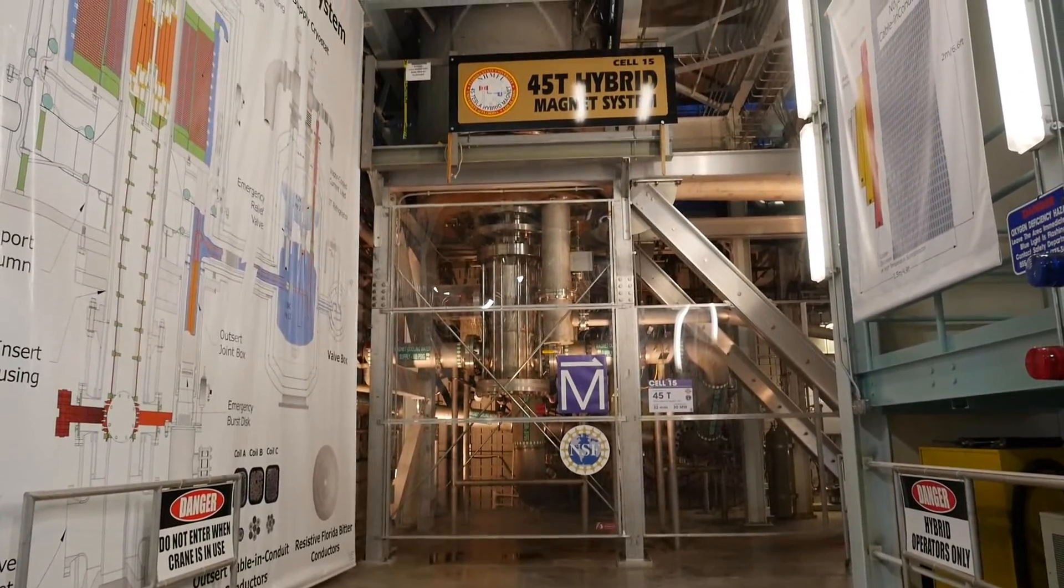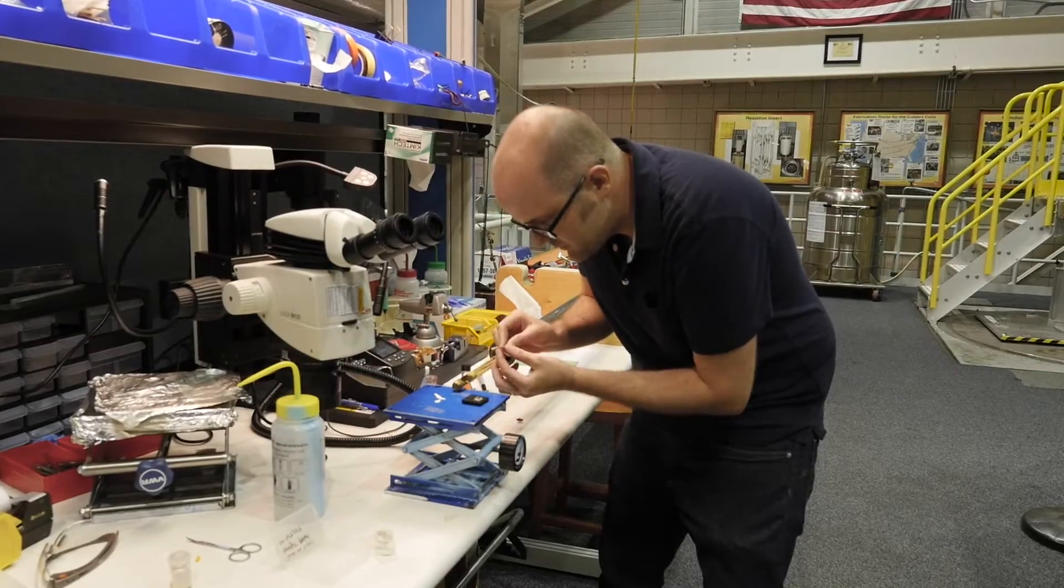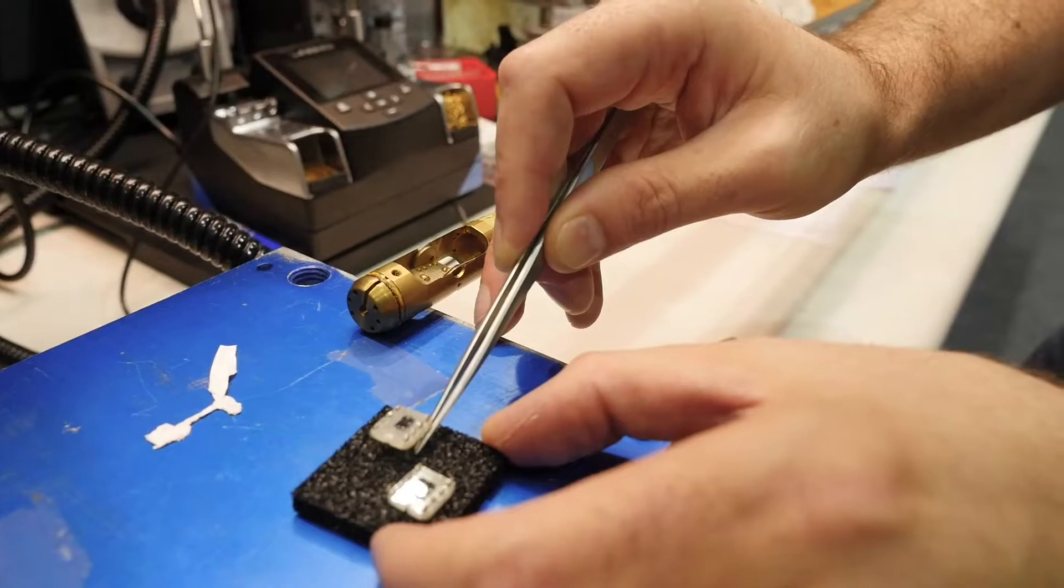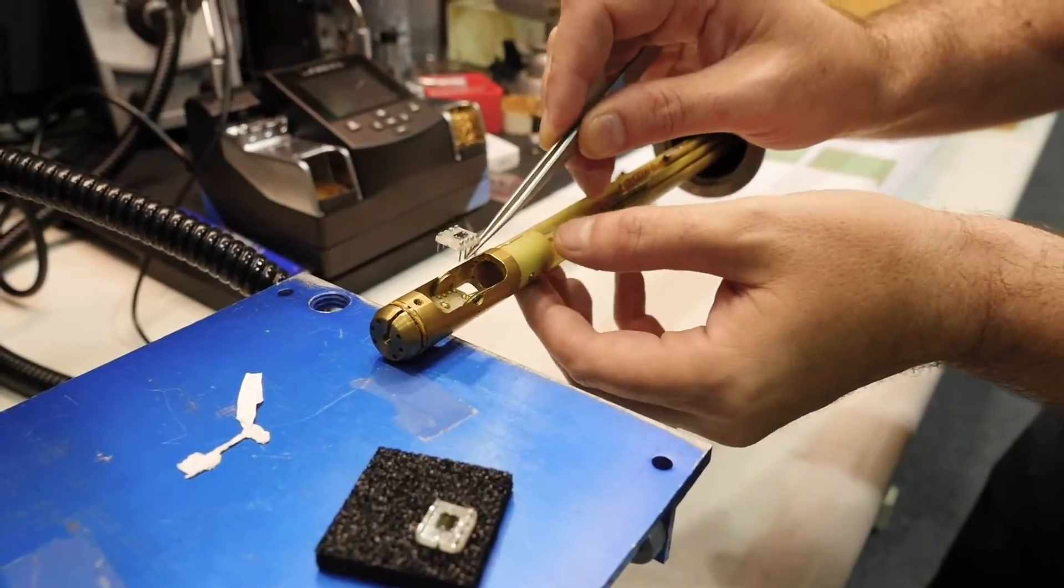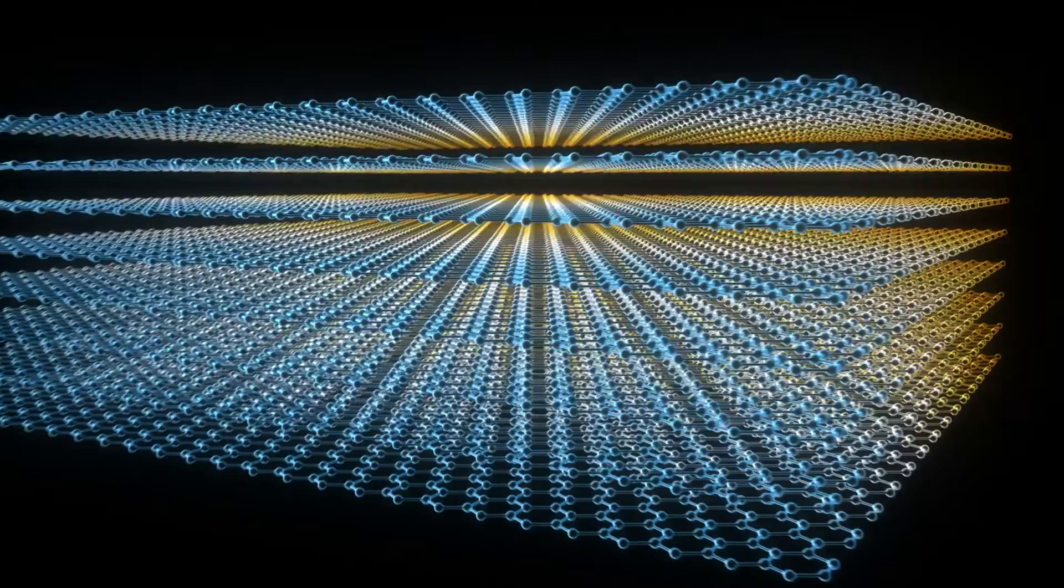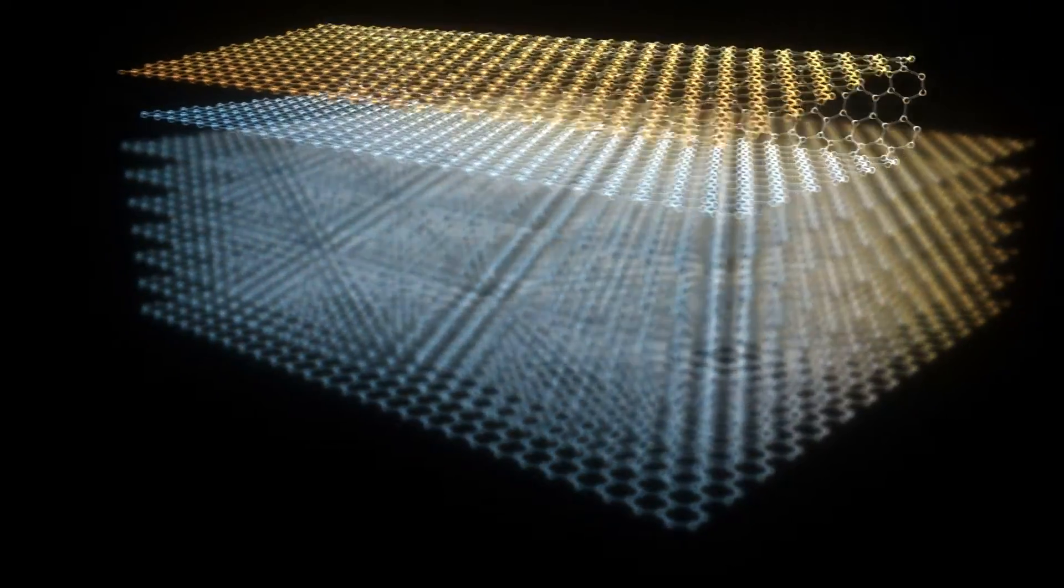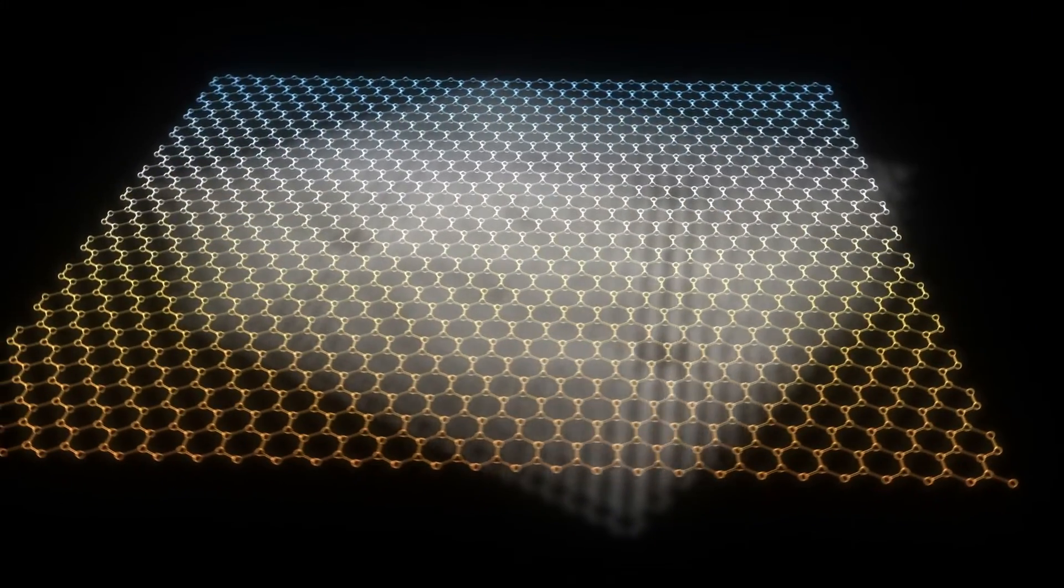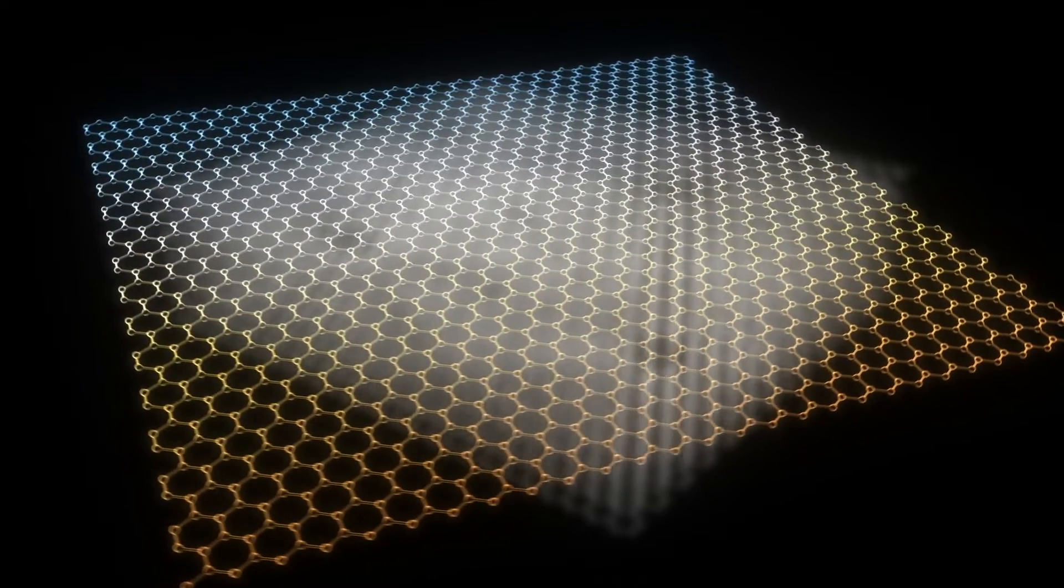In another part of the mag lab, physicist Corey Dean is using the DC field facility to research the properties of a relatively newly isolated material called graphene. It's a flat sheet of carbon molecules laid out in a chicken wire-shaped pattern. It's unique in almost every metric that you can define. It's been called the strongest material. It's the thinnest conductor. It has one of the best thermal transport properties.